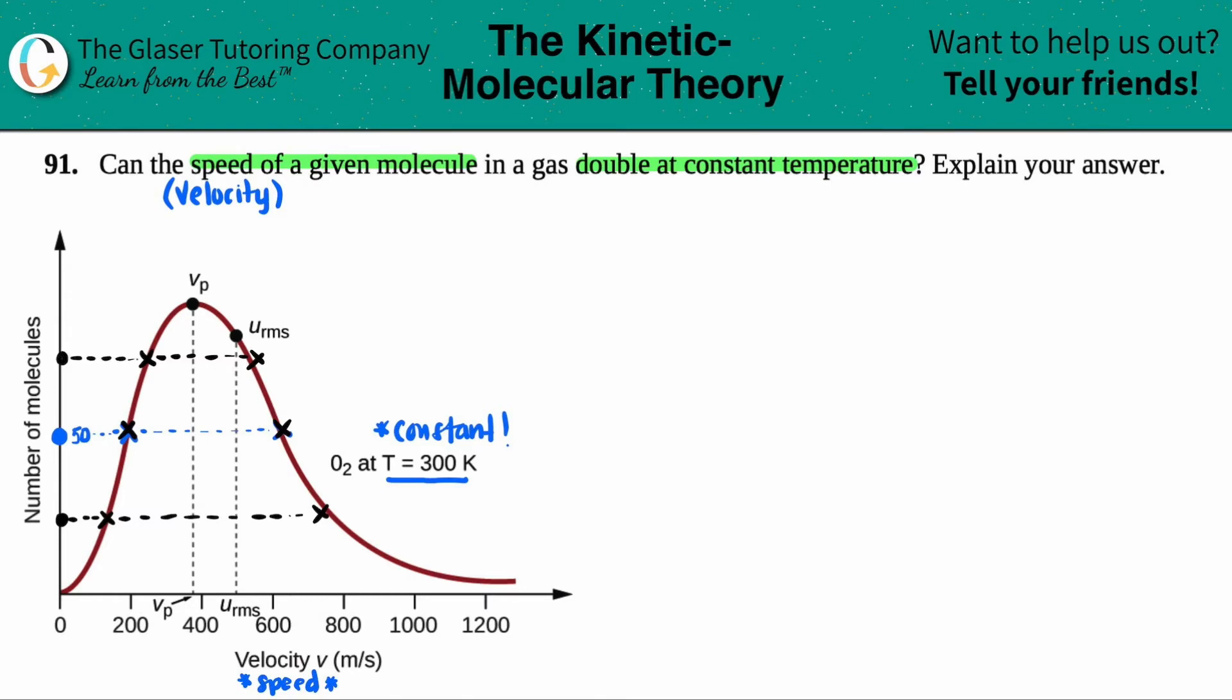So what this is basically telling you is that for any constant temperature value, the number of molecules will have low speeds, which would be represented by the first time it hits the graph, right? You see how these are lower than their respective other side of the graph? These are higher velocities than these. So they will both have low speeds and high speeds.